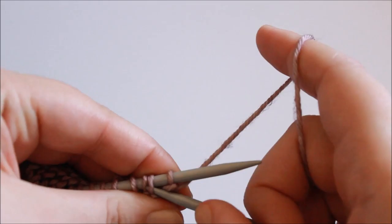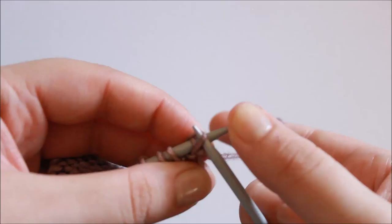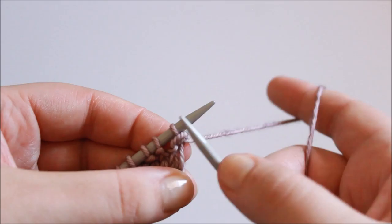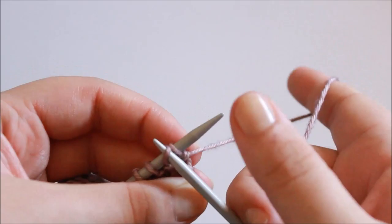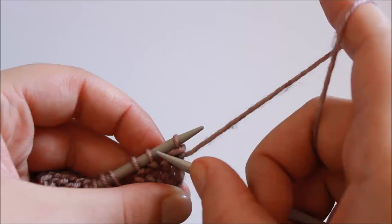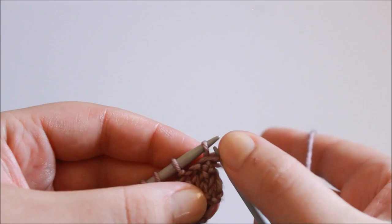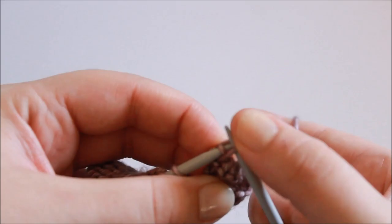To slip it over the first stitch, we insert our needle into first the second stitch and pull it up and over that first stitch, and that gets rid of it. Do that again with the third stitch, pull it up and over.